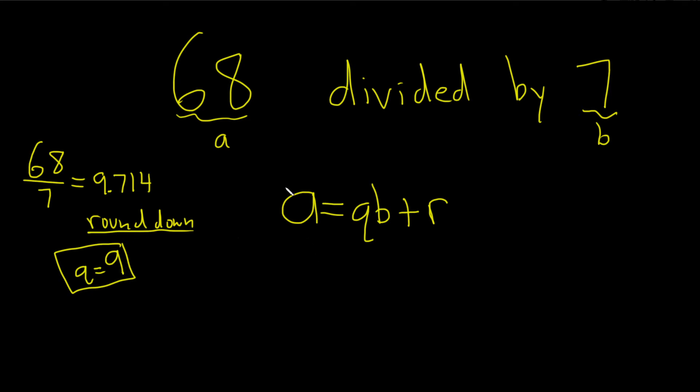To get the remainder, just plug everything into the formula. We have 68 equals - Q is 9, B is 7 - plus R. Now we just have to find R.